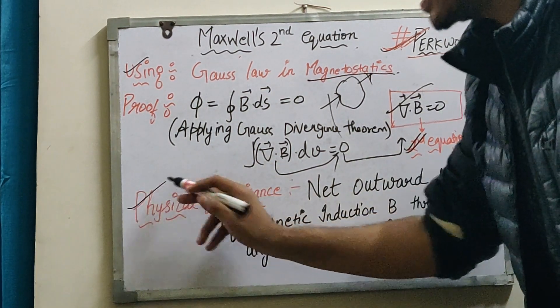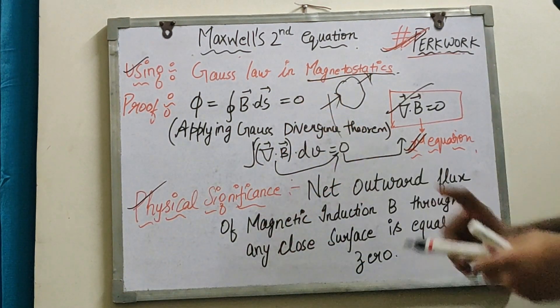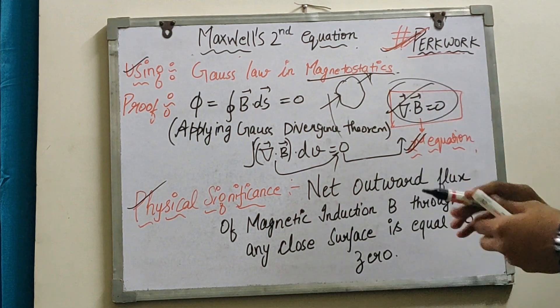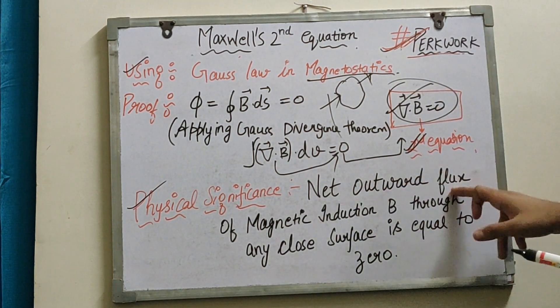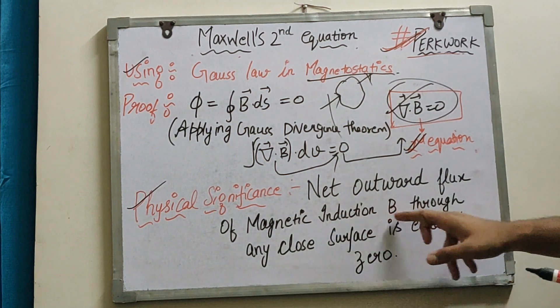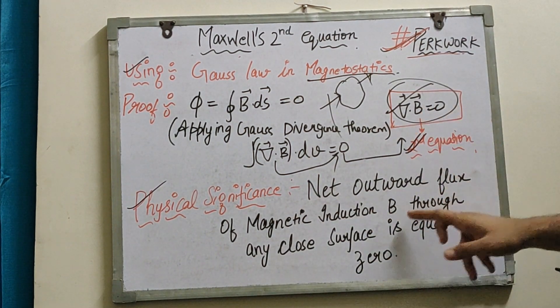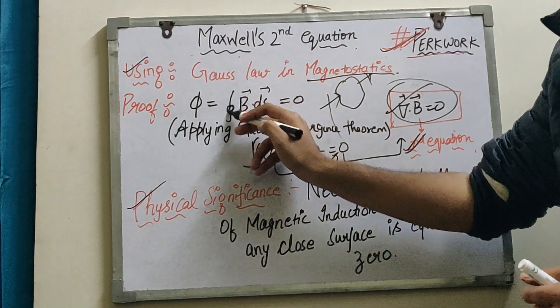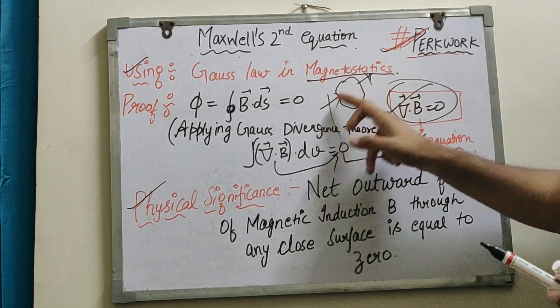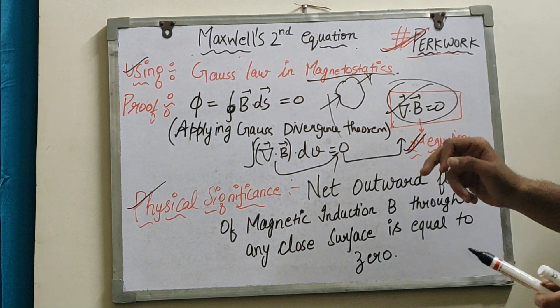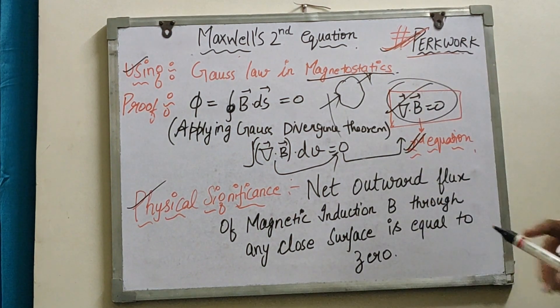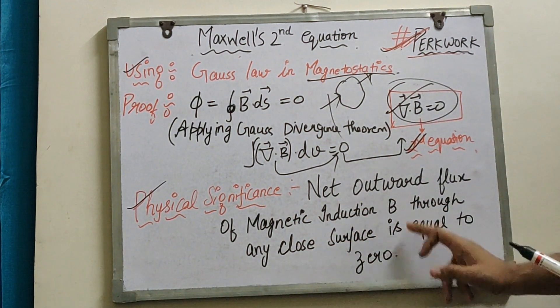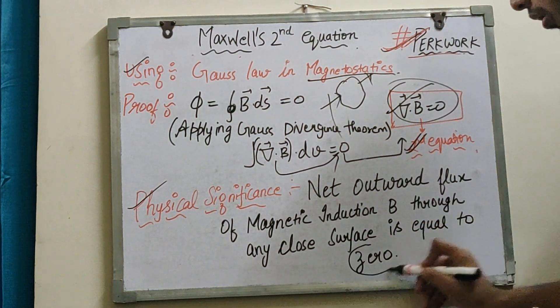Now let's look at the physical significance - what exactly is this equation saying? This equation says that the net outward flux of magnetic induction B through any closed surface is equal to zero. Remember, it's through a closed surface, where the internal and outgoing contributions balance out.